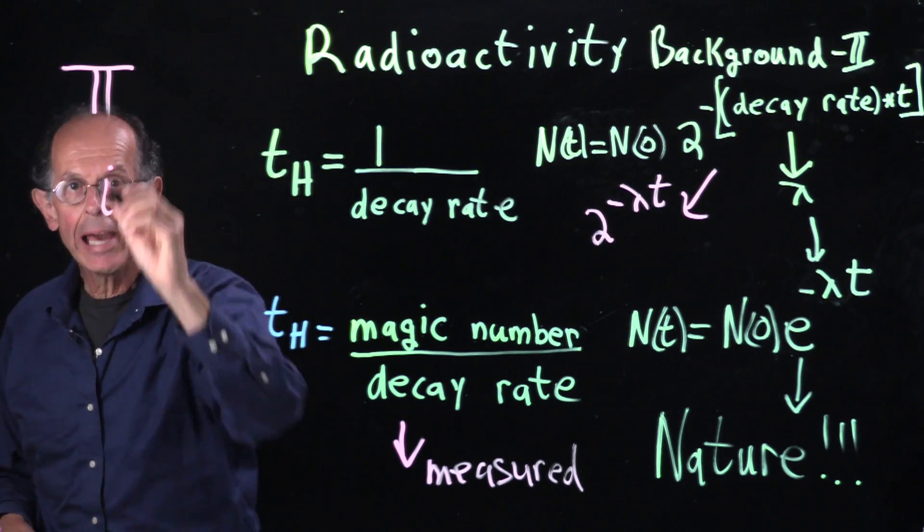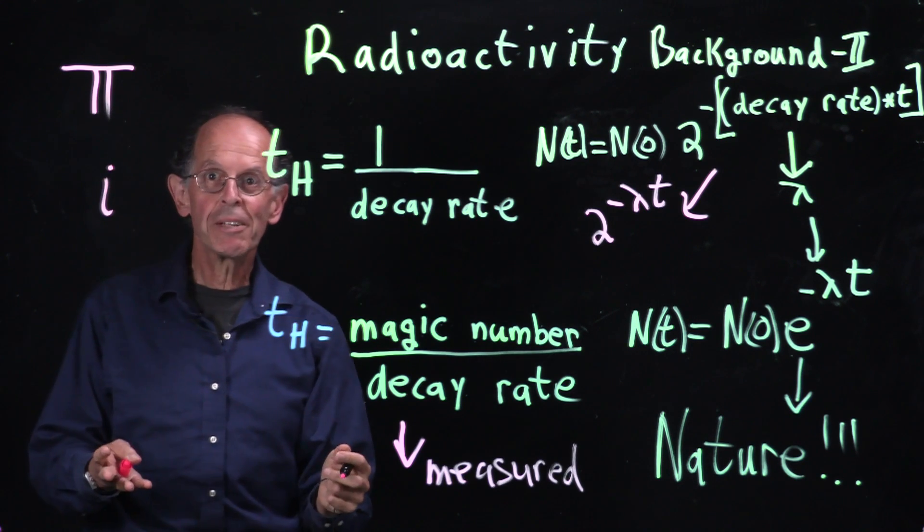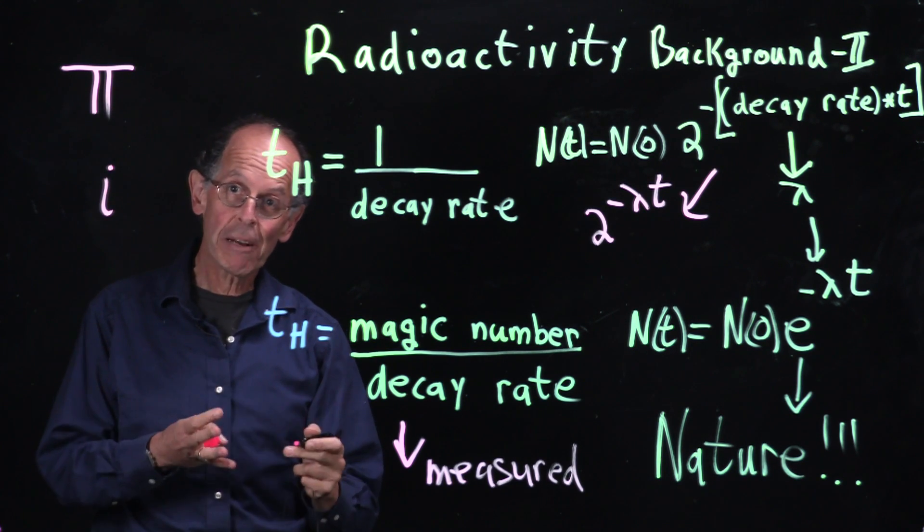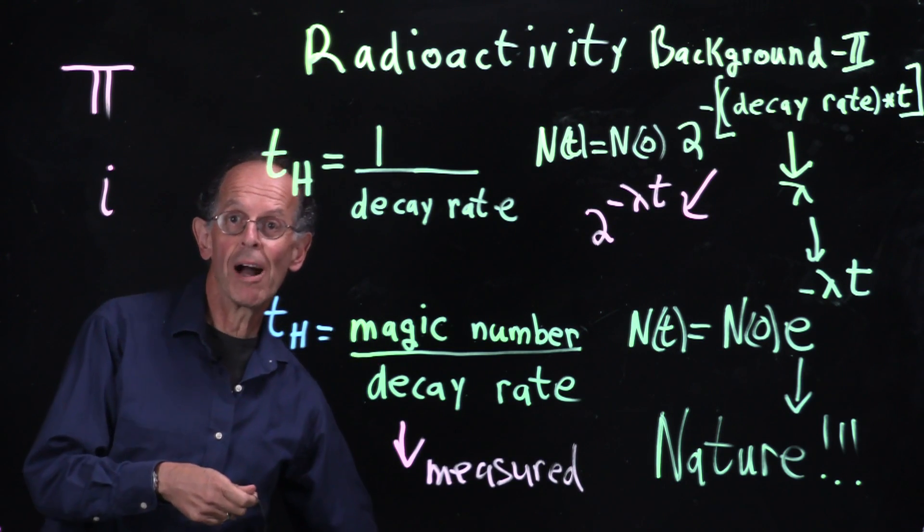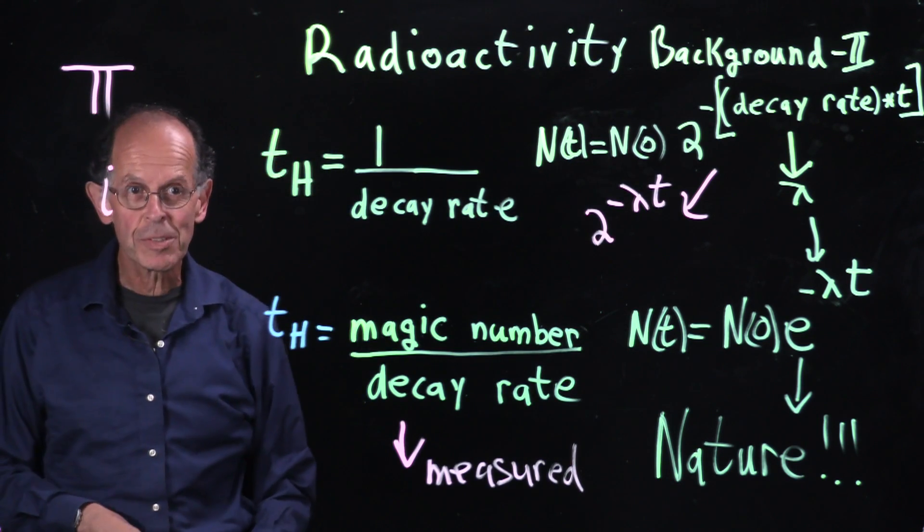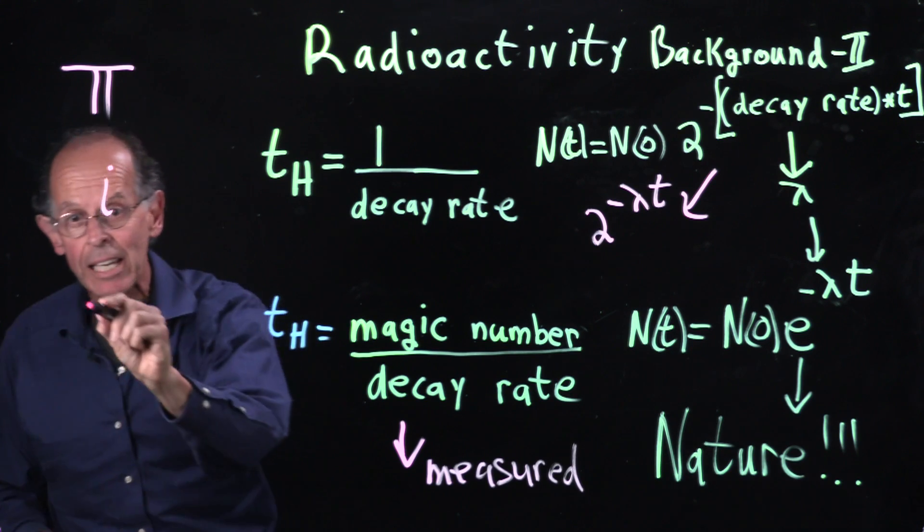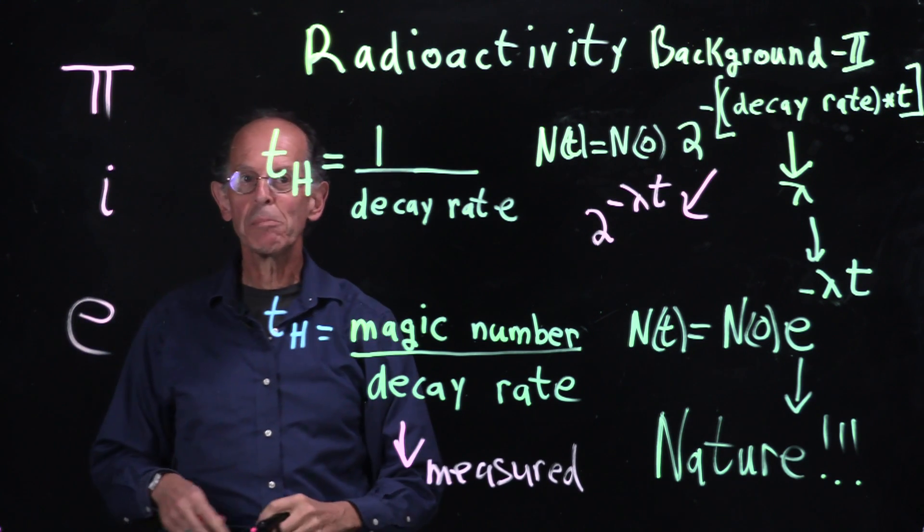Another one is i. We call that an imaginary number, but really it's very real. It represents rotations counterclockwise of 90 degrees. And then there's e. Another magic number of nature.